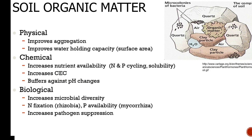Soil organic matter can improve aggregation, water-holding capacity, and surface area. It can also increase nutrient availability, which is included in our nitrogen and phosphorus cycling. It increases cation exchange capacity, which we discussed on the first day and will continue to discuss throughout the quarter. It buffers against pH changes. Biologically, it increases microbial diversity, helps with nitrogen fixation, and helps with phosphorus availability through mycorrhiza, and increases pathogen suppression — so it's always a good thing in your soil.